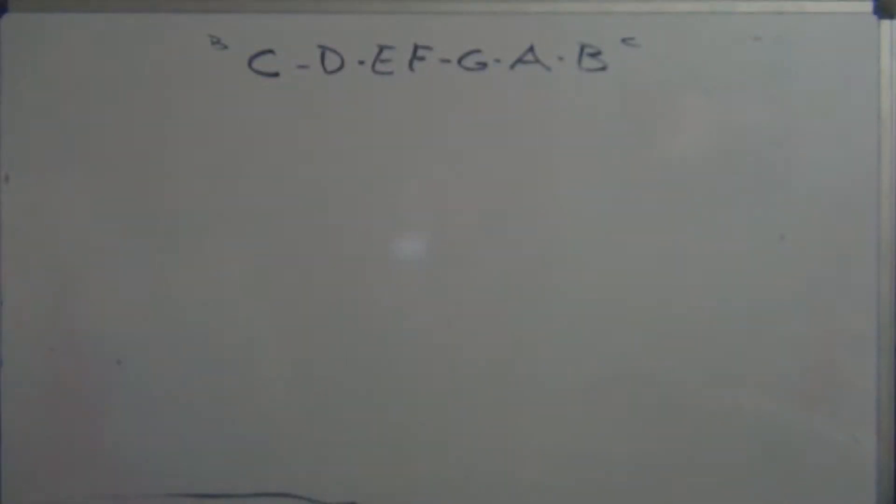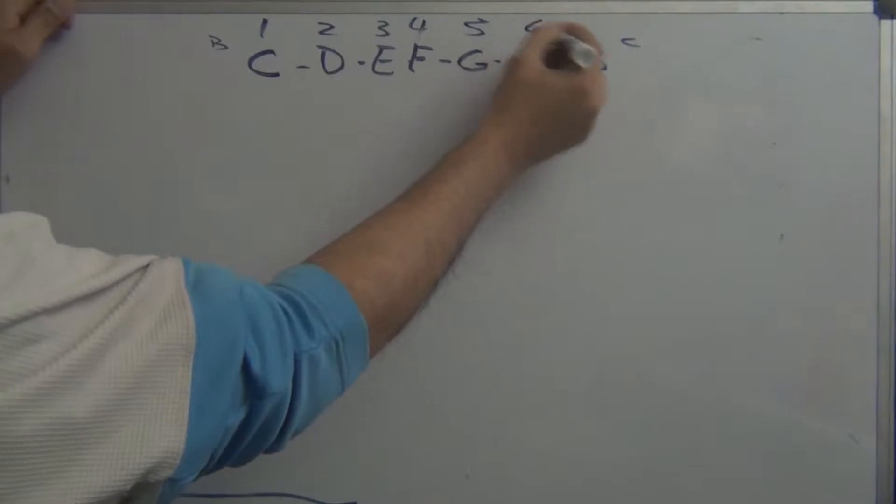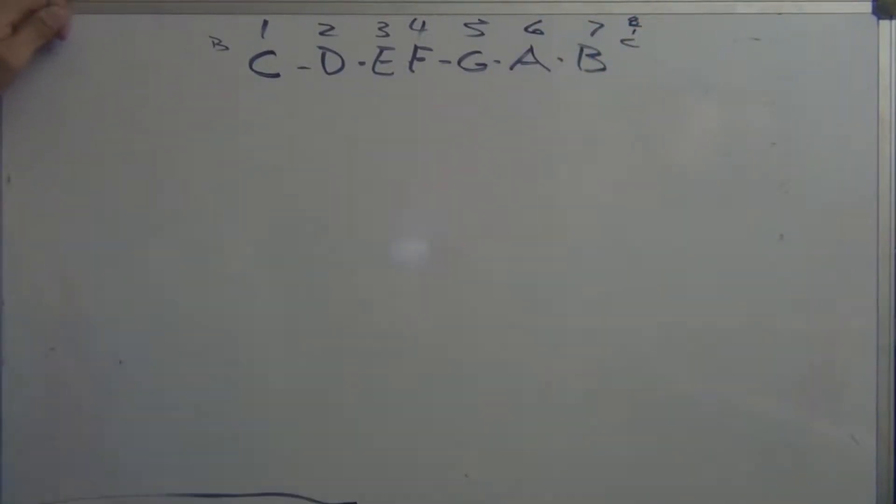Okay, so the numbers, which are the degrees: one, two, three, four, five, six, seven, and eight, or one. Same thing, same difference.